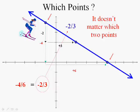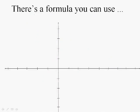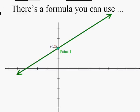Now, it's kind of a pain to draw these pictures, so there's going to be a formula you can use if I just give you the two points. Let's look at this line and these two points: point one will be (0, 2) and point two will be (3, 4).